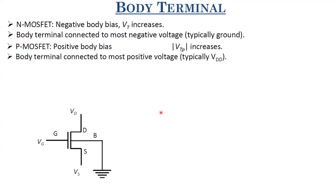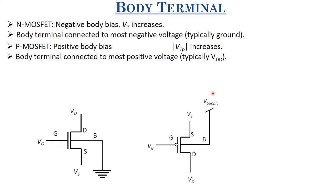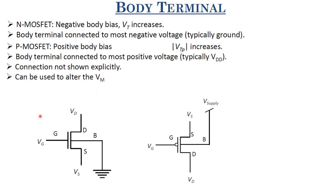Similarly, for P-MOSFET, applying positive body bias increases |VTP| for similar reasons. In P-MOSFETs, the body terminal is connected to the most positive voltage — typically VDD — so that the channel-source and channel-drain junctions are not forward biased. Whenever the body terminal is not shown, assume it is connected to VDD for P-MOSFET. This body bias effect can also be exploited to change the inverter switching threshold by modifying the body bias of N-MOSFET or P-MOSFET.